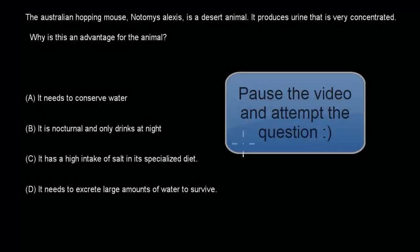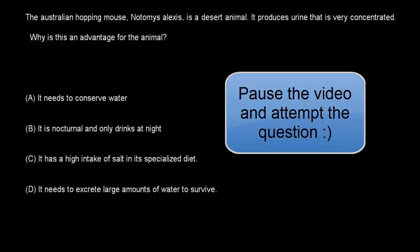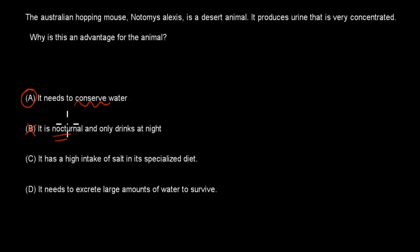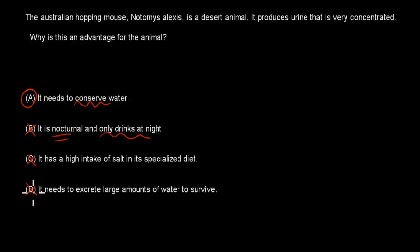Five seconds to pause the video and attempt the question. The correct answer is A, because it produces concentrated urine to make sure it doesn't lose as much water — so it's to conserve water. B is incorrect; it is nocturnal, but the reason is to stay away from the sun, nothing to do with only drinking at night. C is unrelated to the question. D is incorrect — it does not need to excrete large amounts of water to survive.